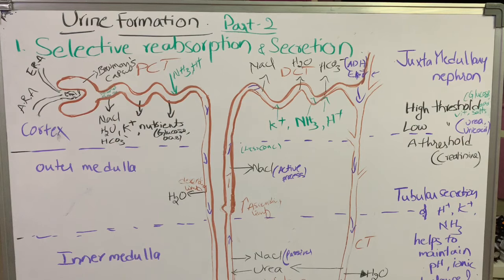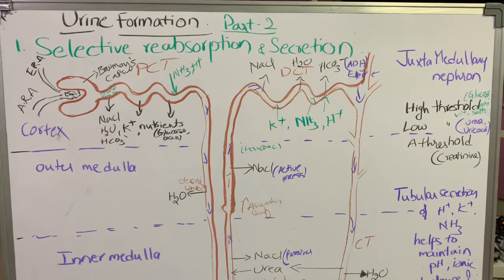Hello dear students, do you know how the 250-gram kidneys filter 180 liters of primary urine in a day, but urinate only 1 to 1.5 liters per day? It's because of selective reabsorption that takes place in the renal tubule of the nephron. This is your Ma'am Sarila, welcome to another lesson on urine formation.